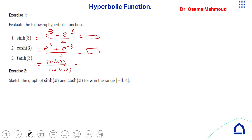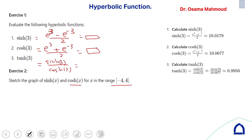To sketch cosh(x) and sinh(x) in the range minus 4 to plus 4, you need to calculate some values. Using the values computed in exercise one, you can sketch the graph. The x-intercept for sinh is (0, 0) and for cosh the y-intercept is (0, 1).